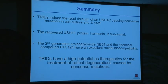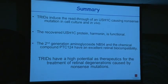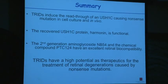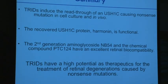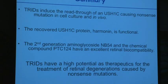In summary, the TRITs we analyzed induced read-through of a USH1C nonsense mutation in cell culture and in vivo, and the recovered USH1C protein is functional. We now have evidence that another nonsense mutation in harmonin can be read through with these drugs, and we're extending these efforts to other USH1C and Clarin-causing nonsense mutations. The second-generation aminoglycoside MB-54 and PTC-124 have acceptable retinal biocompatibility, and TRITs have high potential as therapeutics for retinal degeneration caused by nonsense mutations — not only for Usher but for other retinal degenerations as well.